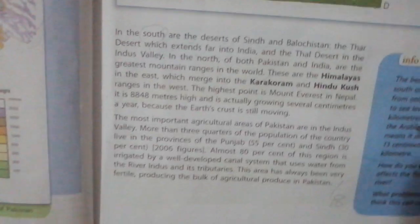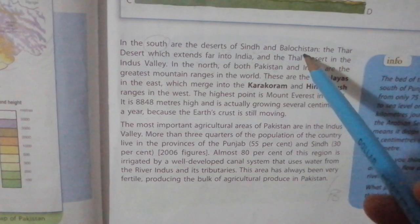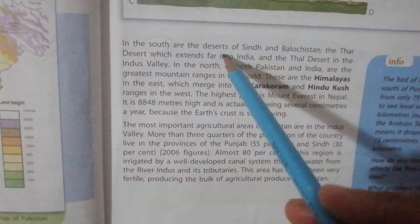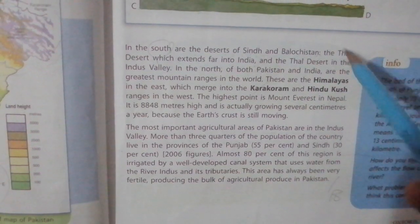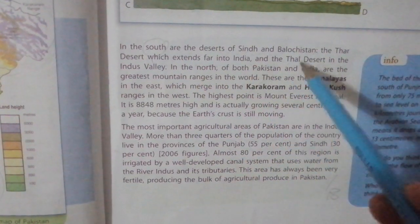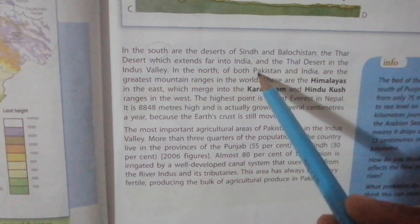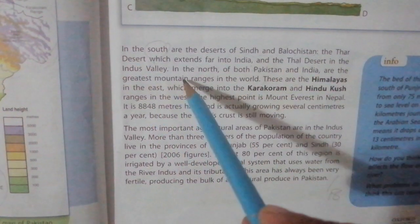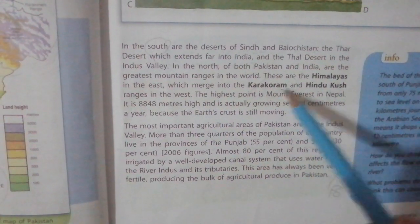On page number five we are discussing the different deserts of Pakistan. In the south of Sindh and Balochistan there are deserts — these are the Thar and Thal deserts. The Thar desert extends far into India, whereas the Thal desert exists in the Indus Valley. Pakistan also has the greatest mountain ranges such as the Himalayas, Karakoram, and Hindu Kush.